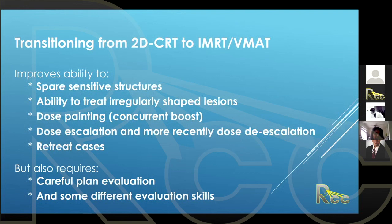Dose painting is another advantage. Most of our head and neck cases done with IMRT or VMAT are dose painted with anywhere from two to four different dose levels, and it's very easy to do with modulated therapy. You can also dose escalate and, more recently, dose de-escalate — there were studies done to potentially increase dose while still being able to spare normal structures.